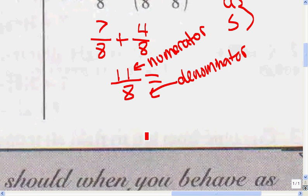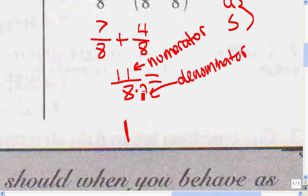The way you do that is by dividing 11 by 8. Ask yourself: how many times does 8 go into 11? Well, 8 goes into 11 one time — because if I try 8 times 2, I get 16, which goes over 11. So 8 times 1 equals 8. My remainder is the difference between 8 and 11, which is 3. So my numerator is 3 over 8.